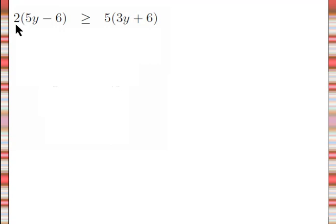So we start out just by using the distributive property to multiply the 2 times this expression and then the 5 times this expression. So if I'm multiplying 2 times something in parentheses, I need to make sure I multiply the 2 times each term. 2 times 5y is 10y. 2 times a minus 6 will be minus 12. Now the greater than or equal to just comes right down. And then I do exactly the same thing over on the right side. I multiply 5 times 3y to get 15y and then 5 times 6 to get 30.